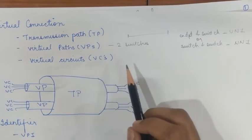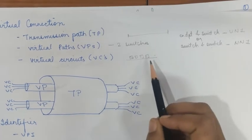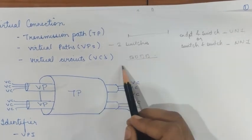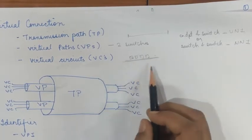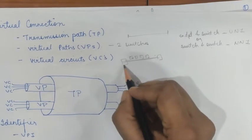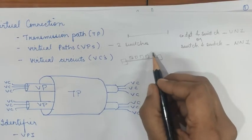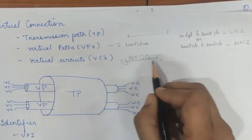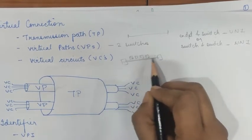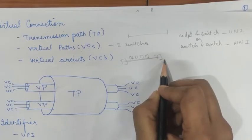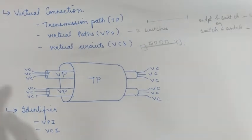A virtual circuit is the basis of cell networks. All cells belonging to a single message follow the same virtual circuit and remain in their original order until they reach the destination. This means the cells arrive at the receiver in the same sequence in which the sender transmitted them — the order is not shuffled.